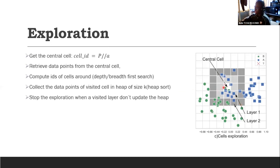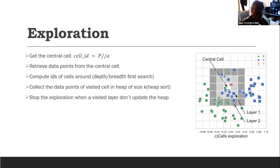To select the data points, we use a heap sort mechanism where the maximum heap size is K. Every time we visit a cell, we add the data points to the heap. When we visit a layer and the heap is not updated, we know that we have our K nearest neighbors stable, and we stop the exploration.